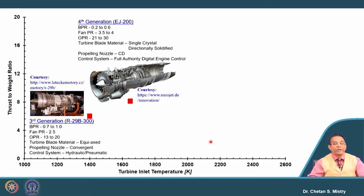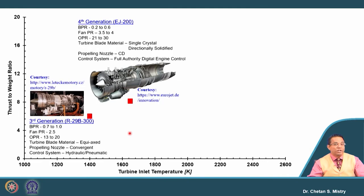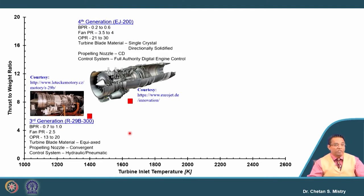Moving to the next: this is the Eurojet 200, defined as a fourth generation engine, where the bypass ratio has reduced from 0.7 to 0.2–0.6. Fan pressure ratio has also risen, and overall pressure ratio has increased. The turbine entry temperature is on the higher side, and that is why the turbine blade material has also changed. The nozzle is more convergent-divergent, and the control system has also changed to full authority digital engine control. The thrust-to-weight ratio here is in the range of 8 to 8.5.